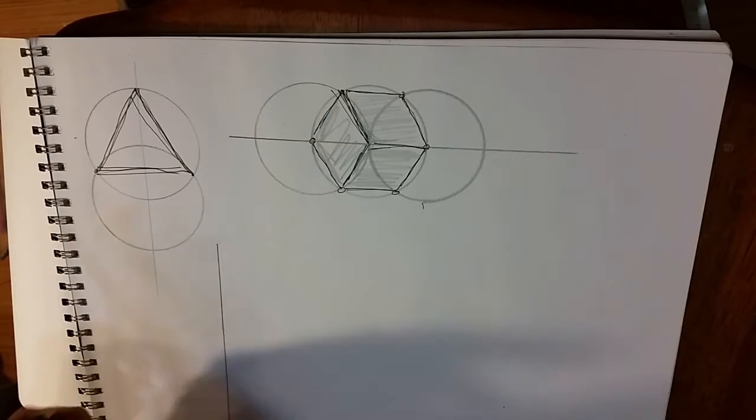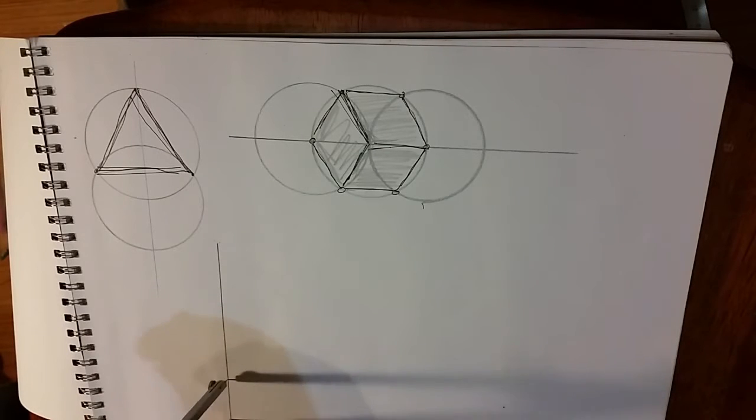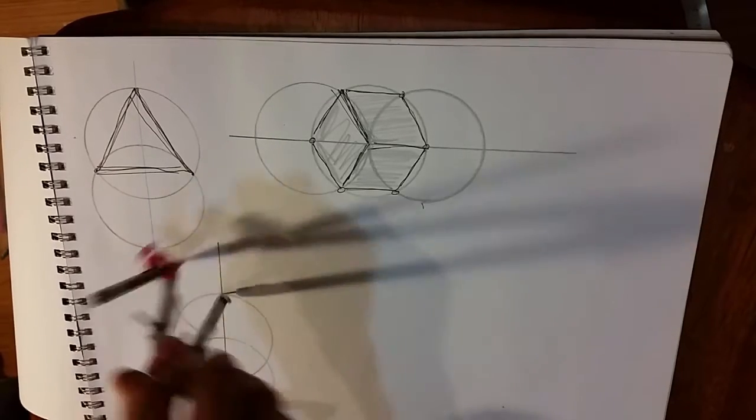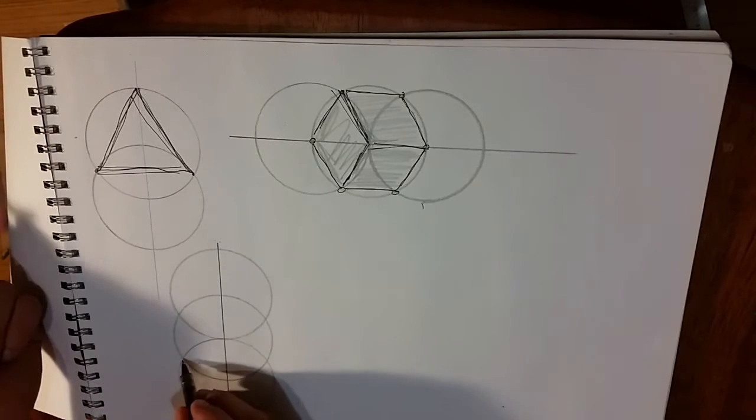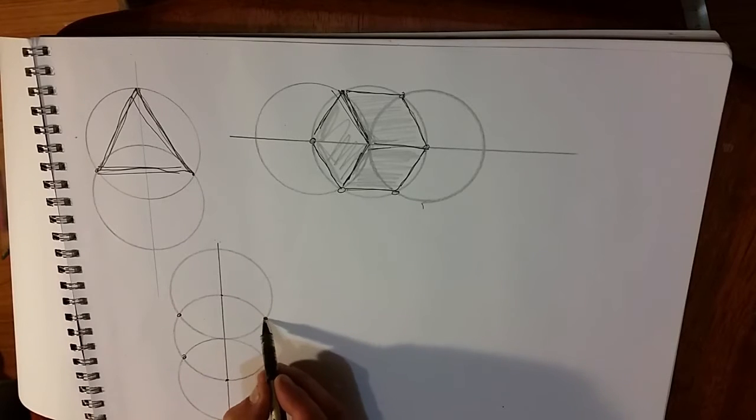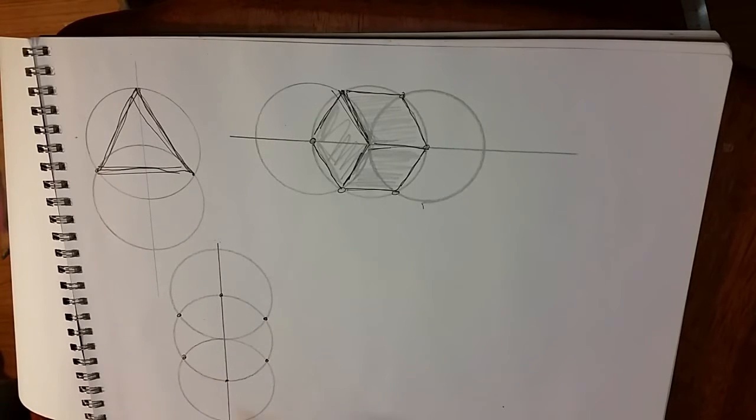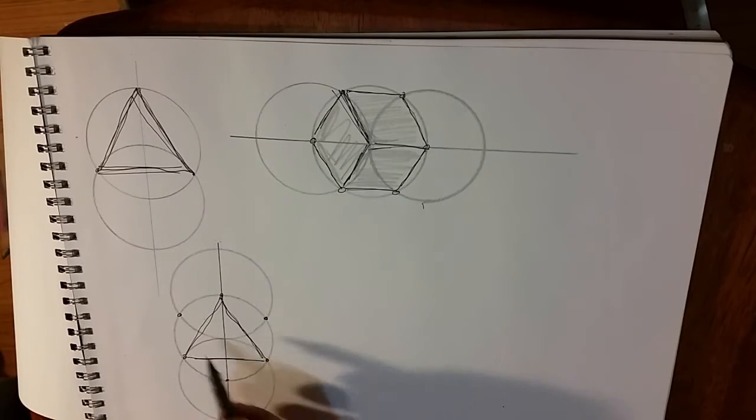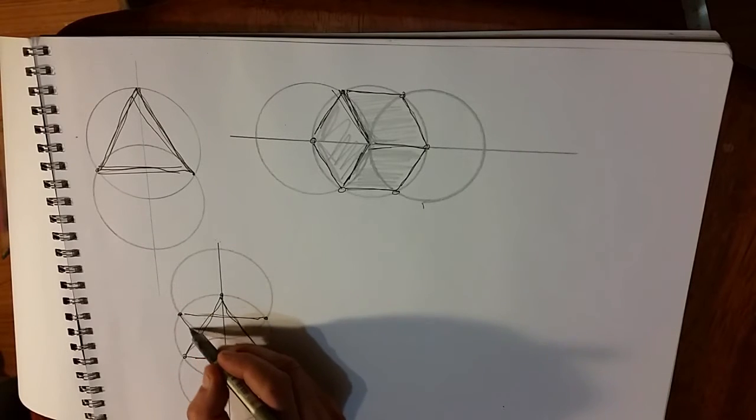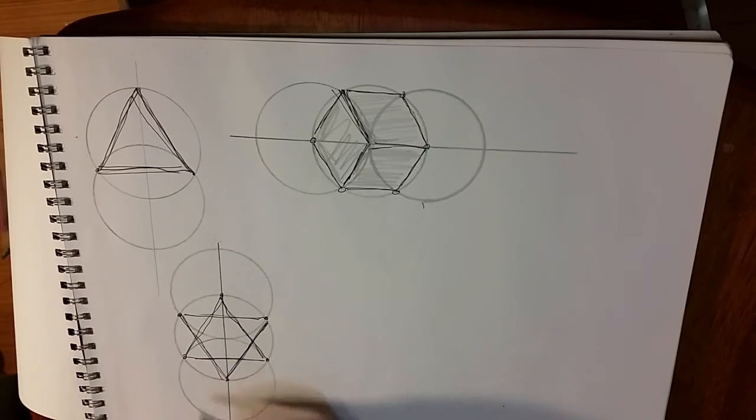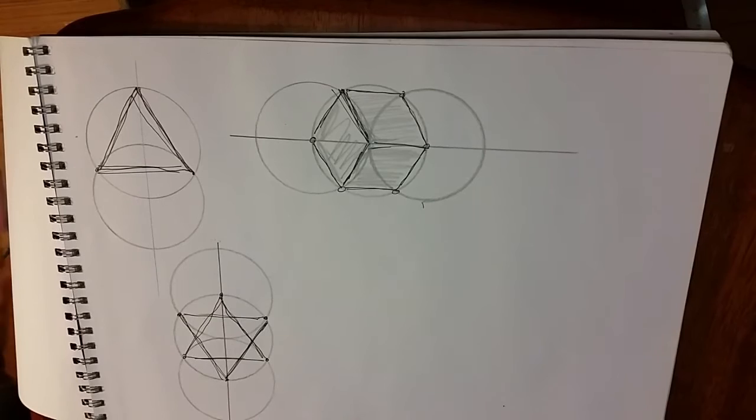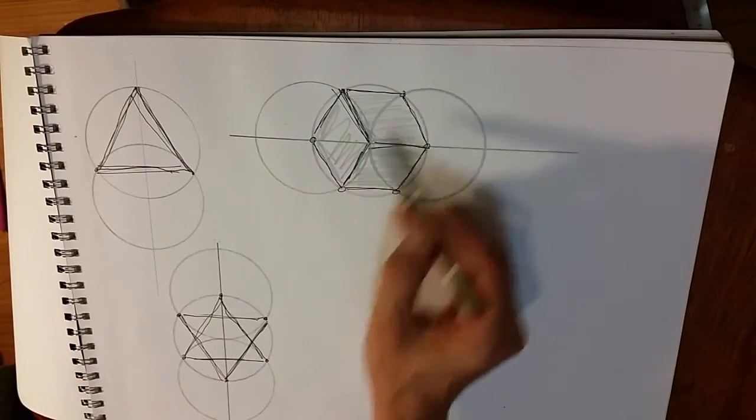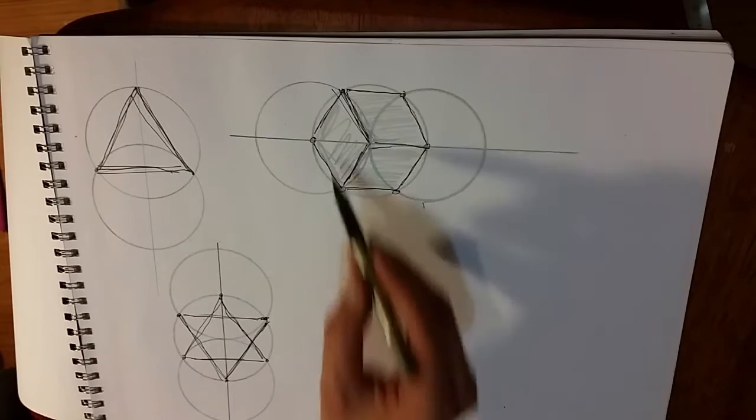And if you do that same construction vertically, now we have six points on the hexagon, but we also have the Star of David, and we have three points, six points, a six-pointed star, or a six-sided polygon, and now to do a twelve.